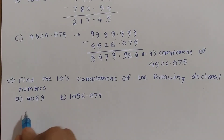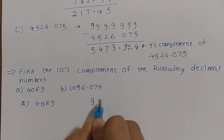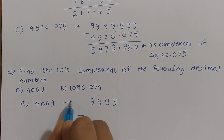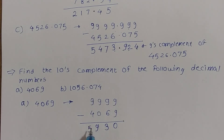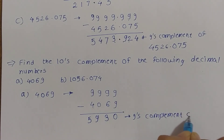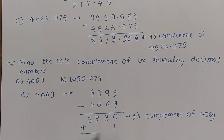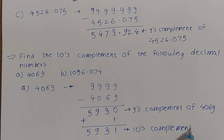The first example is 4069, and we have to find the 10's complement of that number. There are 4 digits, so we subtract each digit from 9: 9-9 is 0, 9-6 is 3, 9-0 is 9, 9-4 is 5. So 5930 is the 9's complement of 4069. To get the 10's complement, we add 1 to that result: 0 plus 1 is 1, 3 as it is, 9 as it is, 5 as it is. So 5931 is the 10's complement of 4069.